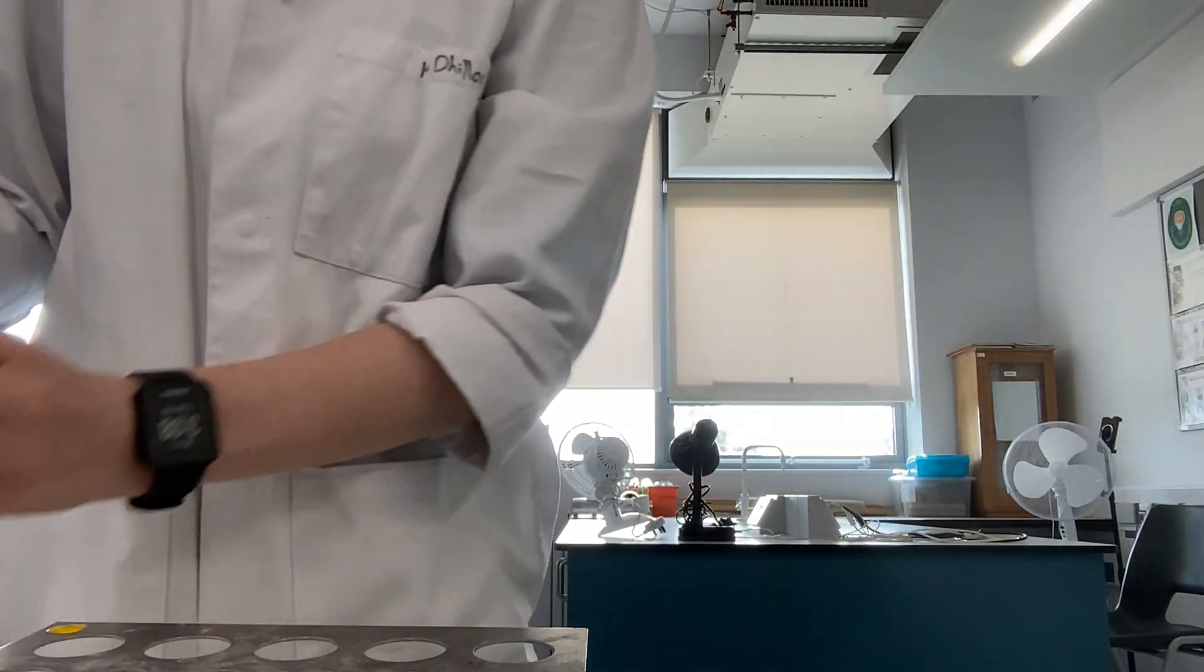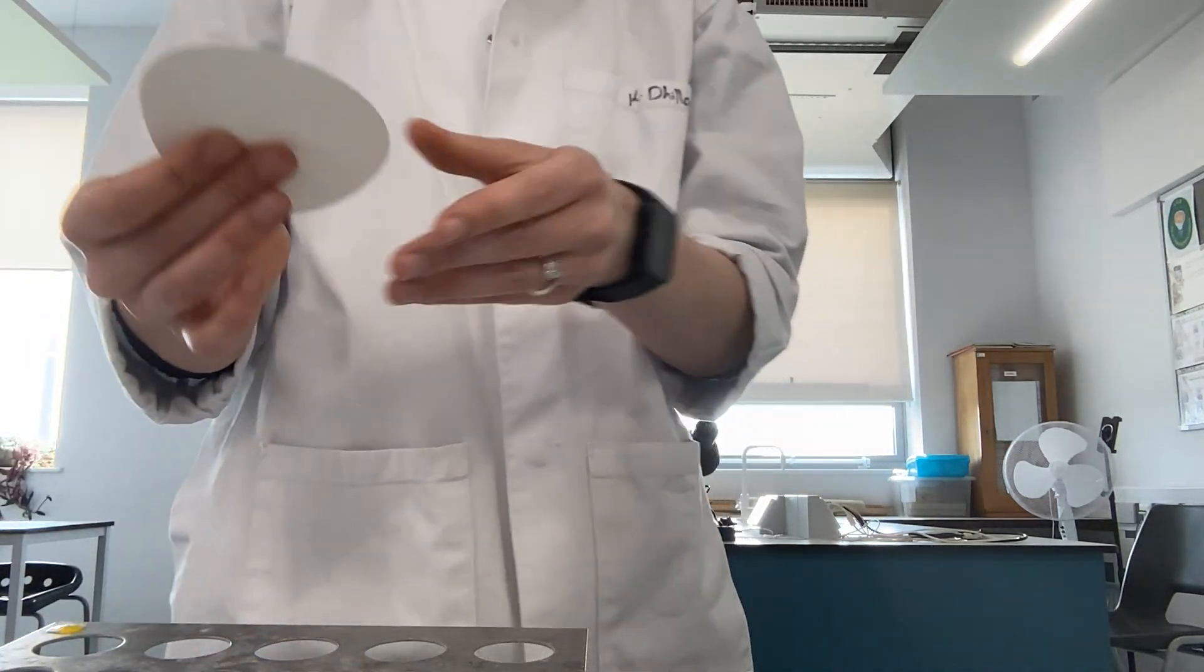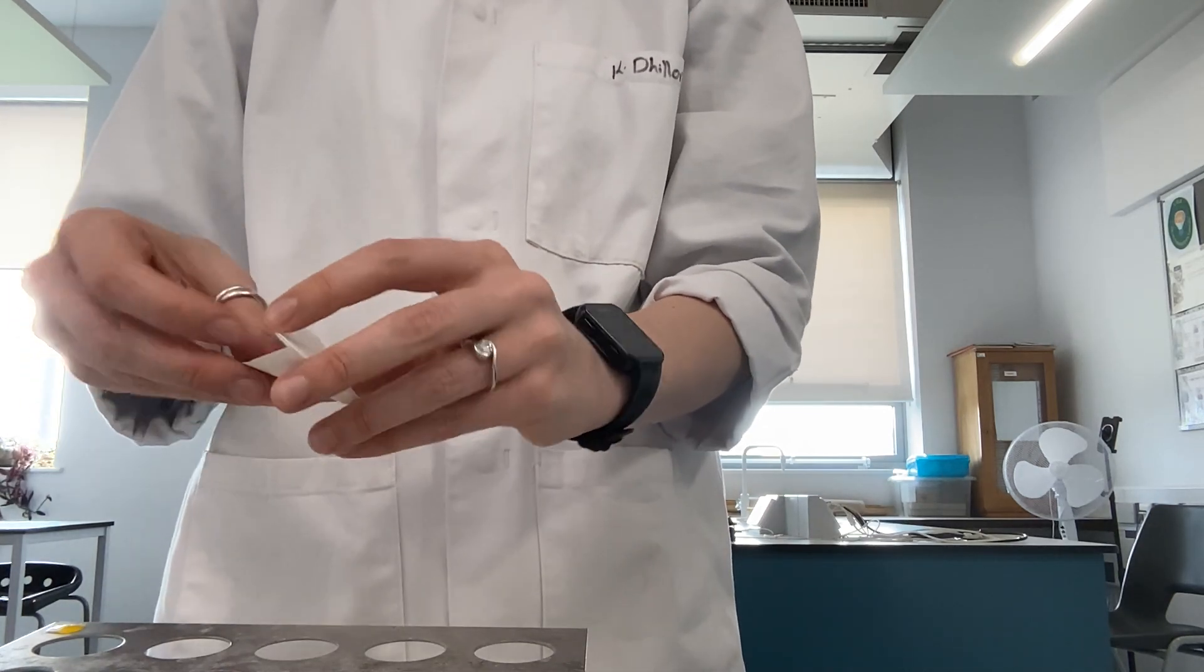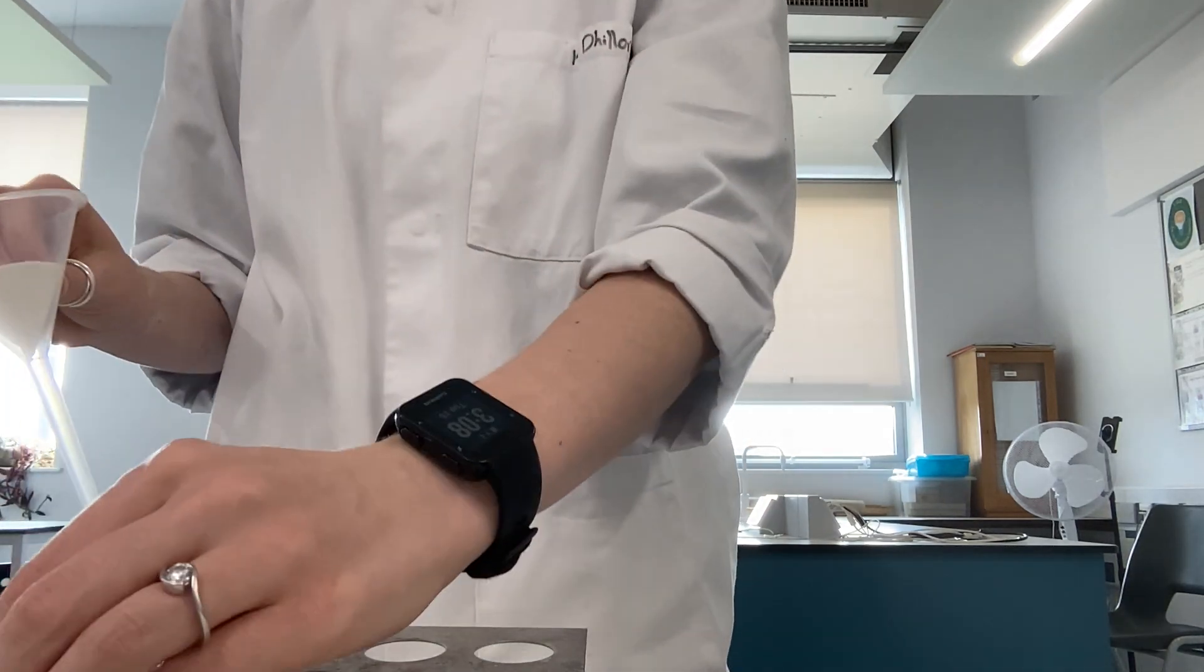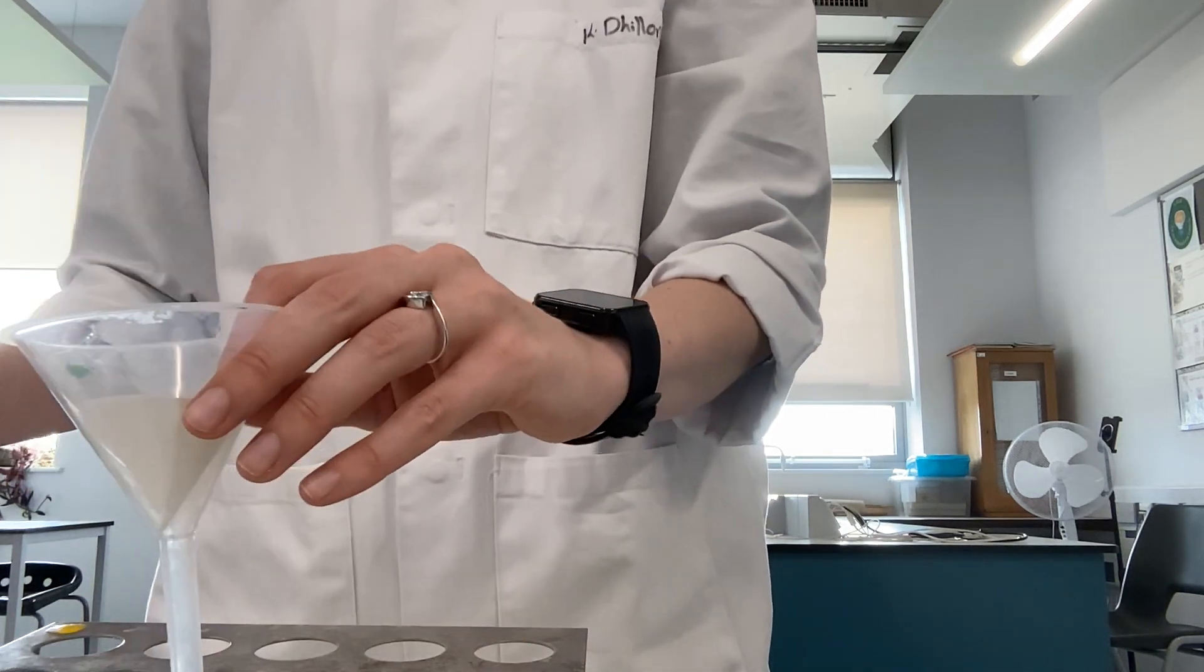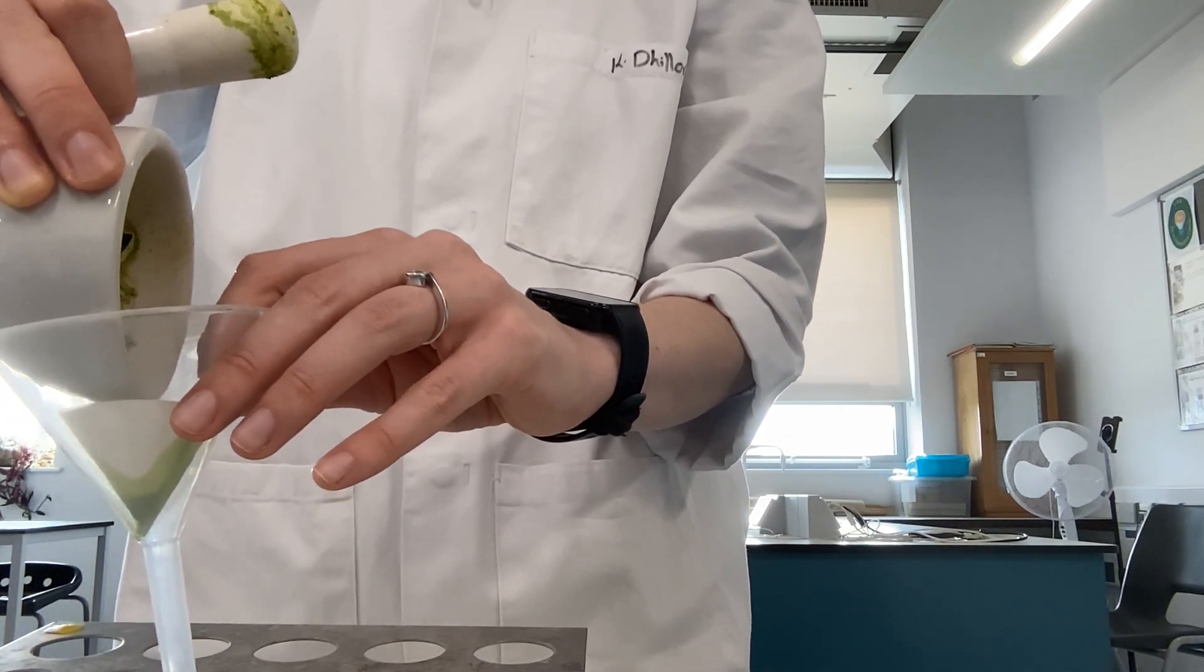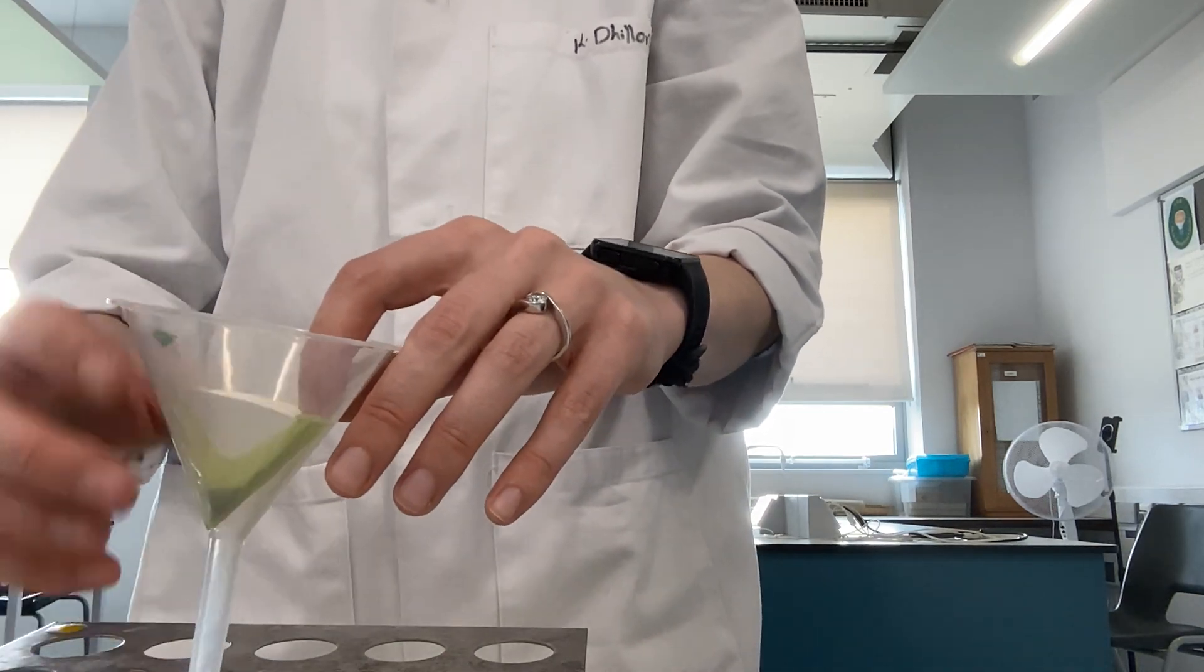Now that I have ground up my paste, what I need to do is filter this through. We take some filter paper, fold it in half, fold it again, and then open it up into a cone shape. Put this into our funnel, which we'll then put into our small tubes. I will then take my pestle and mortar and pour the liquid into that filter paper, and we'll wait for that to filter through into the tube at the bottom.